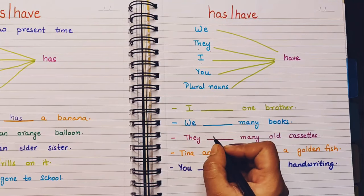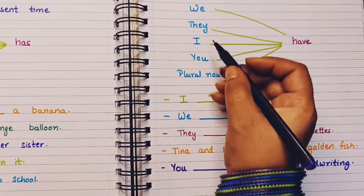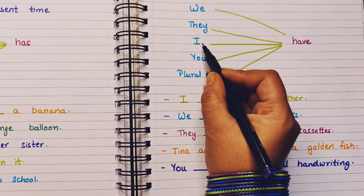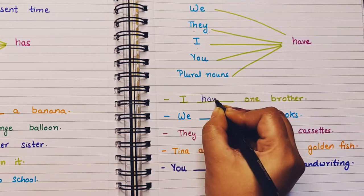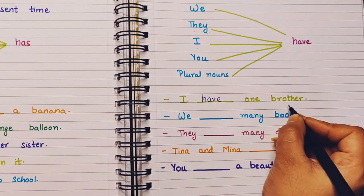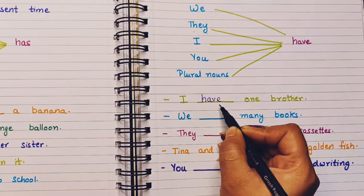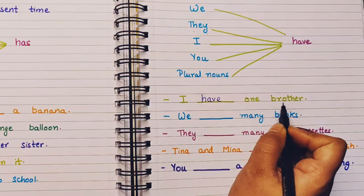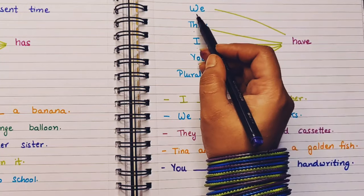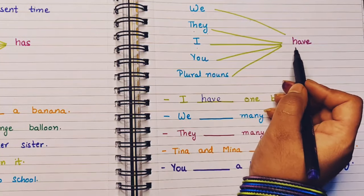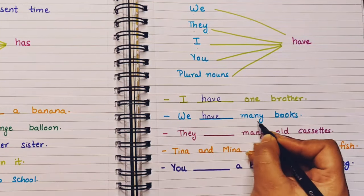Let's understand with some examples. I — dash — one brother. With I, always have comes. So I will write: I have one brother. I cannot say I has one brother — that is a wrong sentence. With I, have always comes. Next: we — dash — many books. With we, we always use have. So: we have many books.